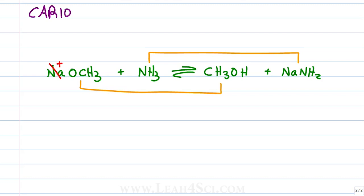Let's get rid of our spectators. Positive Na is simply there to balance the OCH3 minus. Positive Na is simply here to balance the NH2 minus. What are our acids and bases? CH3O minus is negative which is more negative than its neutral CH3OH counterpart making sodium ethoxide the base and methanol the conjugate acid. Ammonia is neutral which is more positive than its NH2 minus counterpart making ammonia the acid and amide the conjugate base.